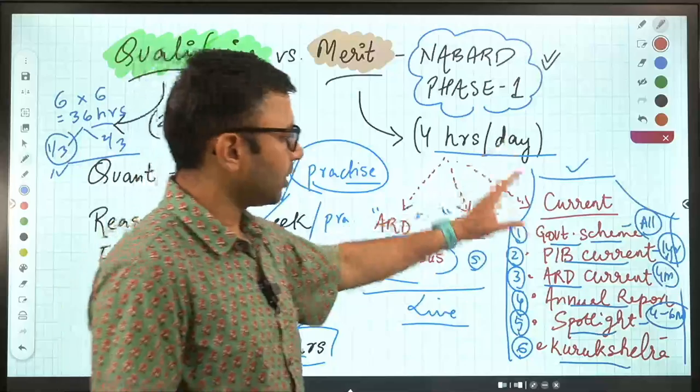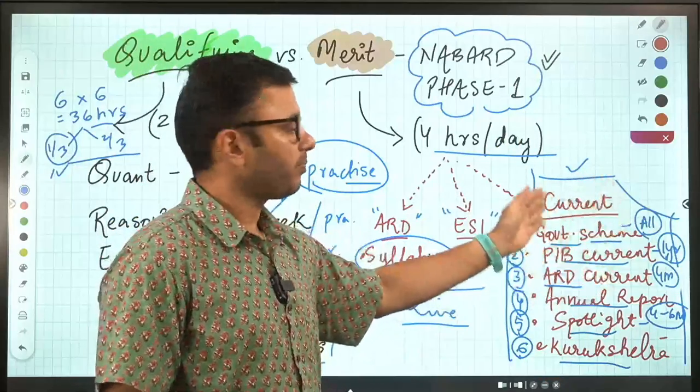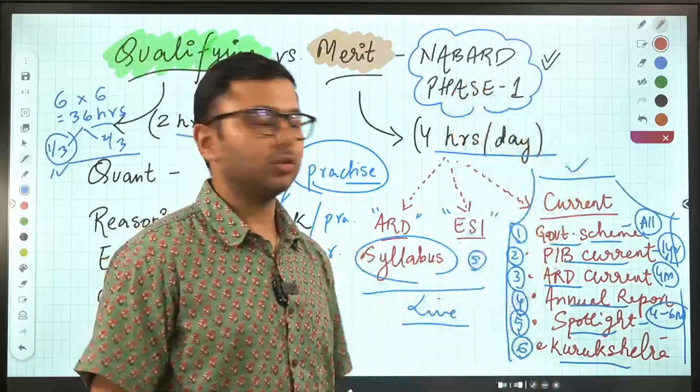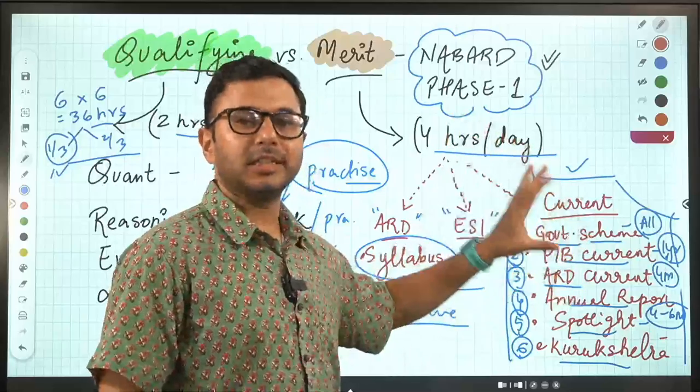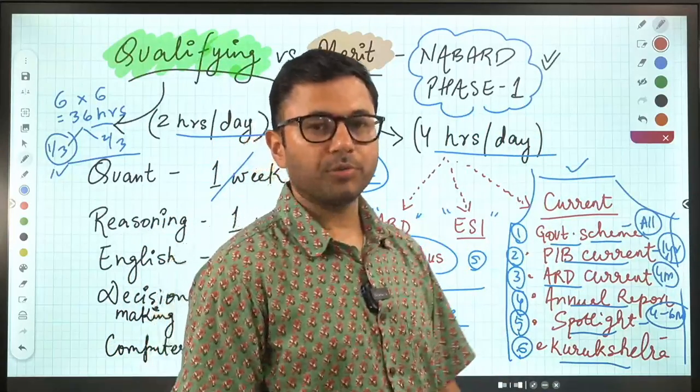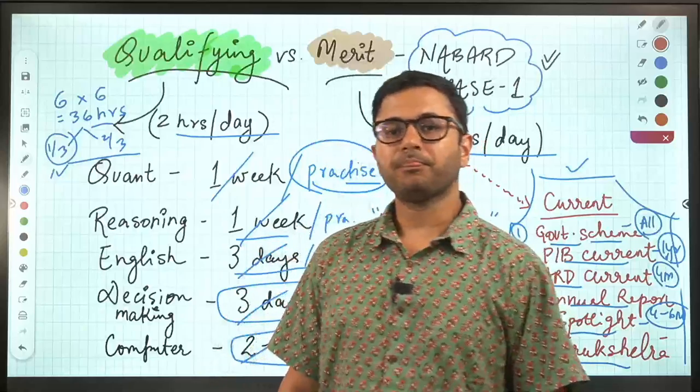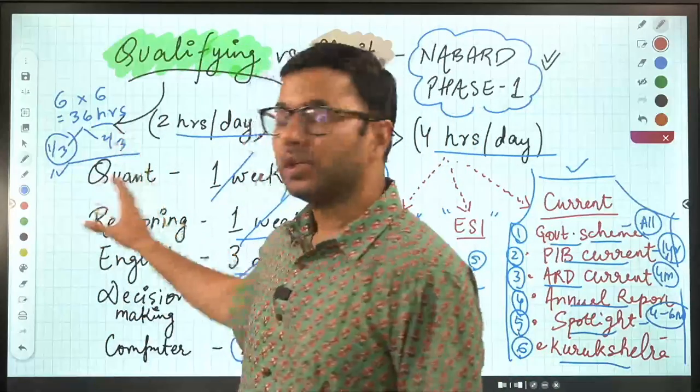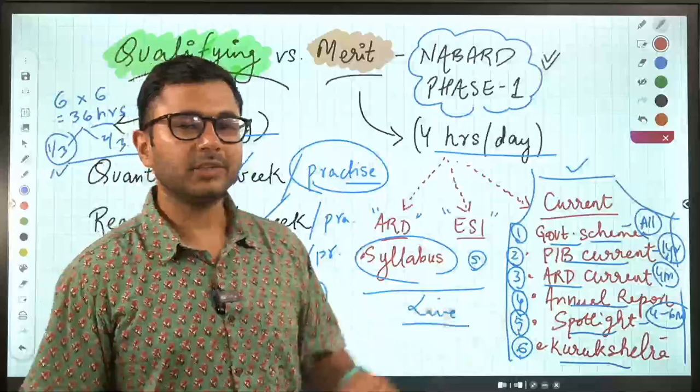So this is how you try and cover the entire thing in about 30 days. And then you use the last 10 to 15 days in revising all these six headings. So this is how you should be covering the entire syllabus plus current affairs for both qualifying as well as merit section in the next 45 days.